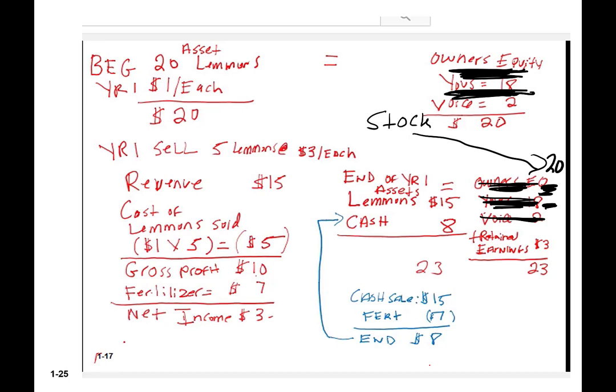We decide to start selling the lemons. We sell them — differentiated as 'spinning lemons' — at $3 each. So we sell five lemons at $3 each, generating revenue of $15. Then we go to the fertilizer store and buy $7 worth of fertilizer to keep the lemon tree alive.